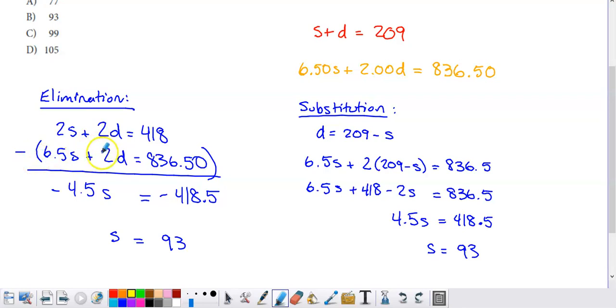It doesn't matter what order you do this in. If you would have preferred to have this equation written at the top and then subtract this equation just so you're dealing with positive values, that's fine. As long as you're careful with what you choose to do, there are a variety of ways you could get this correct result. So when I do 2S minus 6.5S gives me negative 4.5S. 418 minus that 836.50 gives me this. Divide both sides by negative 4.5. I get my answer for S. So we know that the answer for this is going to be 93 salads sold.